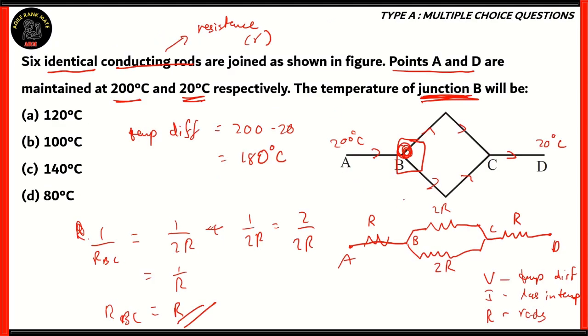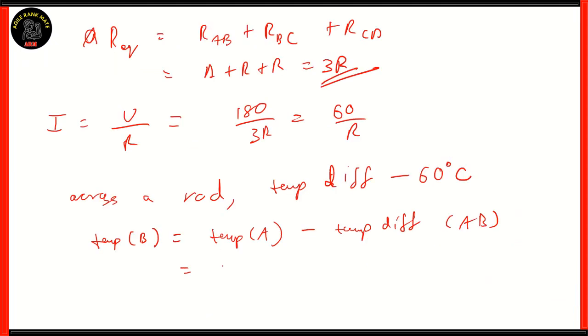Now, AB in our circuit diagram is just one resistor. So therefore, it means that there is only one rod present. So that means there is a temperature difference of 60 degrees. The temperature at A is 200°C. When you subtract 60°C from there, the temperature at B is 140°C.